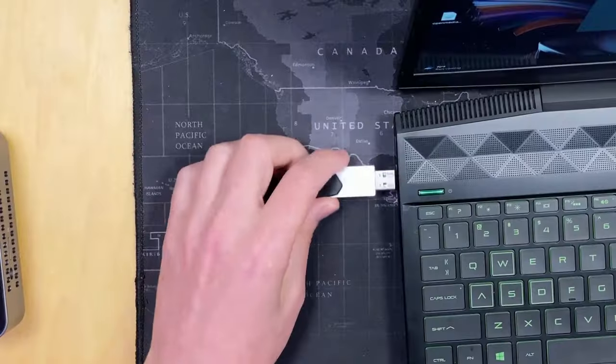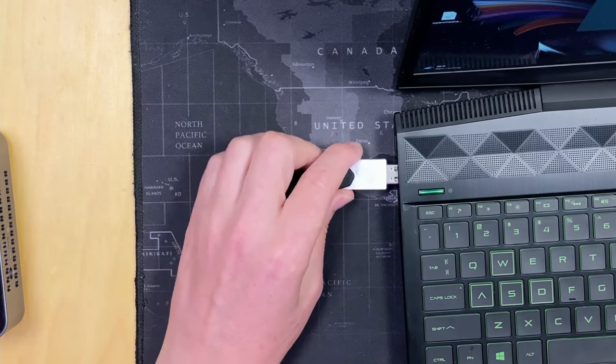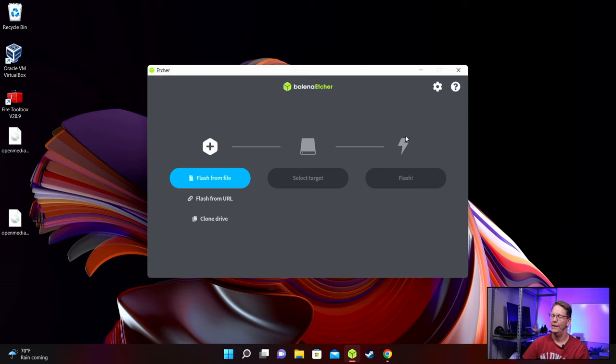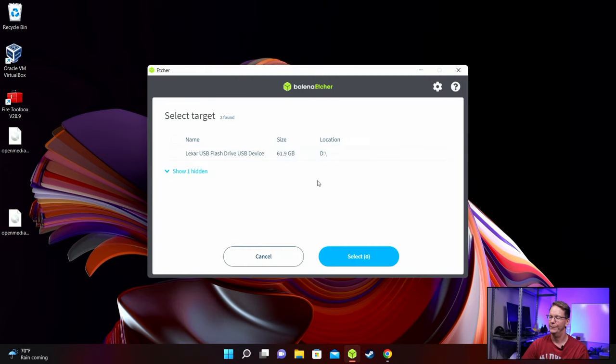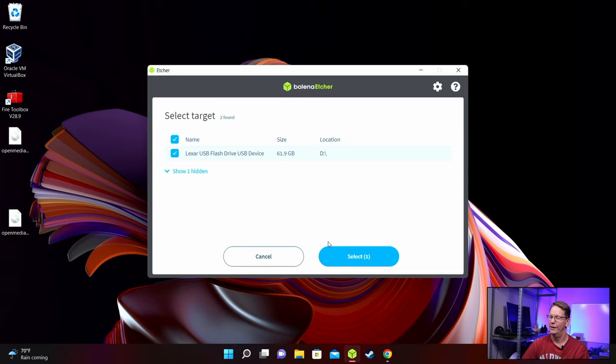Once you have Balena Etcher downloaded and installed and OpenMediaVault downloaded, we need to get our USB drive and then plug that into our computer. Now we want to go to our desktop, click Flash File, pick out our current version of OMV, which is OMV6 here, click Open, select Target, pick our flash drive, and then Select. Now that's going to take a few minutes to write the image to the USB drive, and then it will verify it. Then once it's verified, you can pull that out.